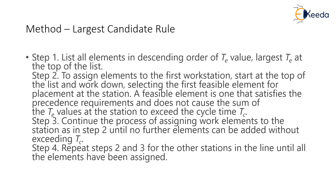Next, we assign elements to the first workstation. Start at the top of the list and select the first feasible element for placement at the station. A feasible element is one that satisfies the precedence requirements and does not cause the sum of all task time values at the station to exceed the cycle time Tc.